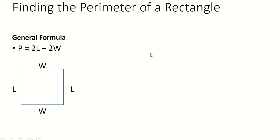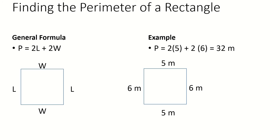If we work with an example, we have two fives and two sixes. So, take two times five plus two times six. Using a calculator or arithmetic, you'll get thirty-two meters as your perimeter.